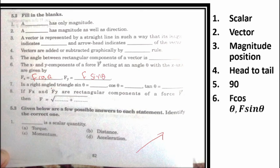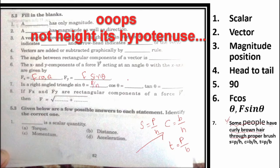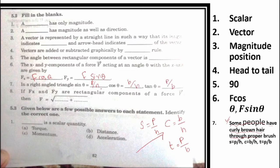In a right angle triangle, sin theta is equal to. Now let's add one thing. Some people have curly brown hair through proper brushing. Some people have sin theta is equal to perpendicular upon hypotenuse. Curly brown hair. Cos theta is equal to base upon hypotenuse. Through proper brushing. Tangent theta is equal to perpendicular upon base. Some people have curly brown hair through proper brushing.